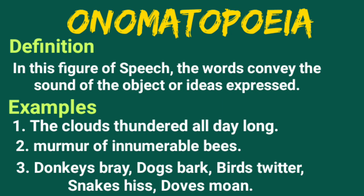Braying — donkeys; barking — dogs; twittering — birds; hissing — snakes; moaning — doves. So braying, barking, twittering, hissing, moaning — these are the sound-denoting words. When such sound-denoting words are used and noticed in any line, then it is called Onomatopoeia.